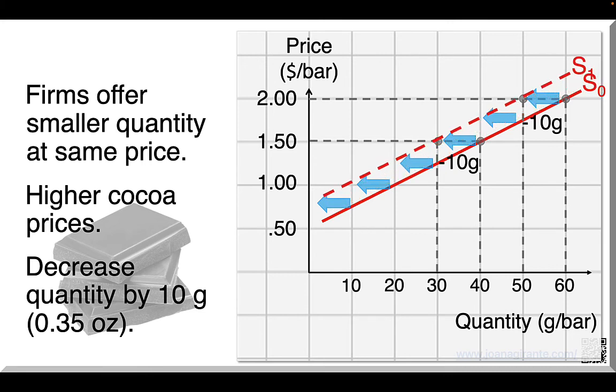We'll have a new supply curve, S1, to the left of the original one, S0, by 10 grams, the bit that's missing from each chocolate bar that is sold. At any level of the price, the weight of the chocolate bars is lower than before. Take price $1.50. The new supply curve shows a quantity supplied that's lower than before cocoa prices went up. 30 grams is lower than 40. At price $2, quantity supplied is also lower, 50 grams, instead of 60.